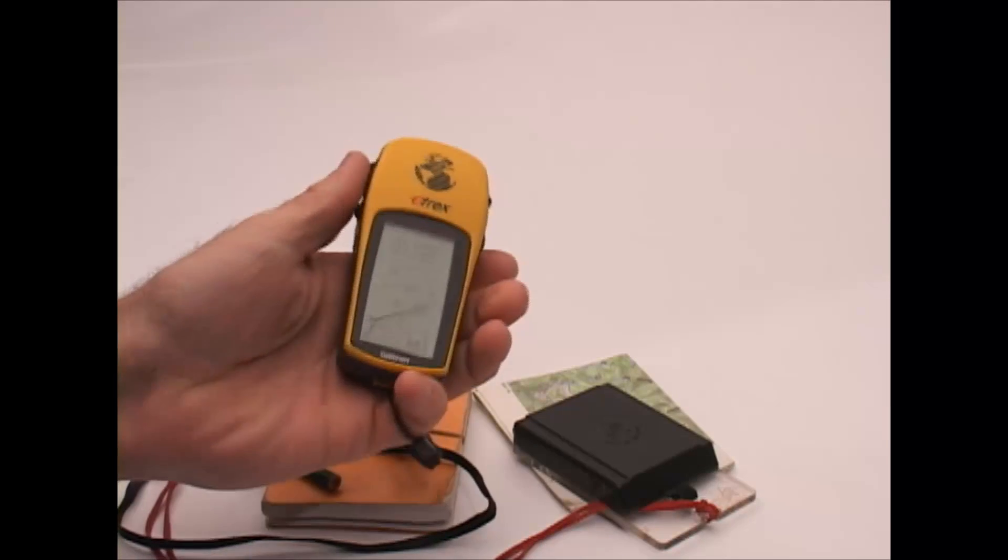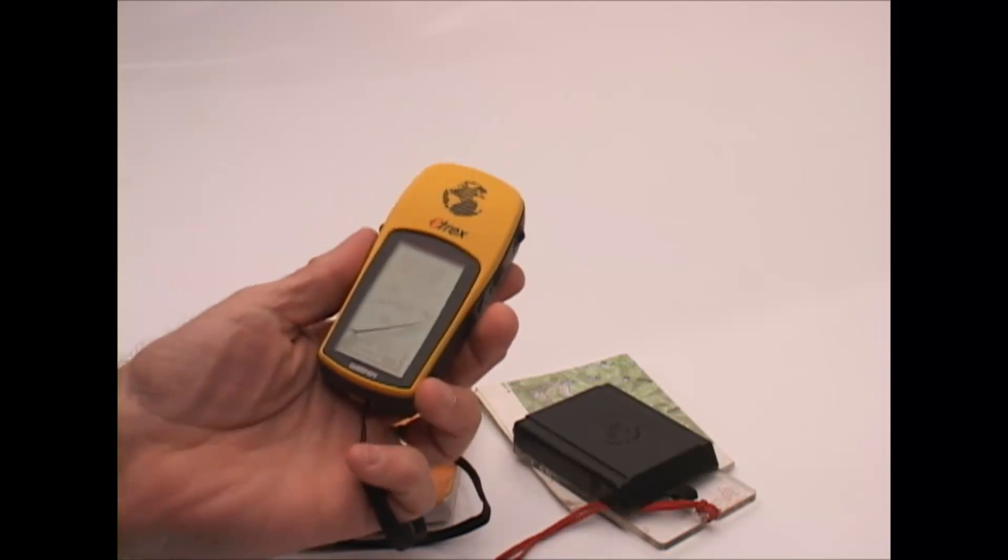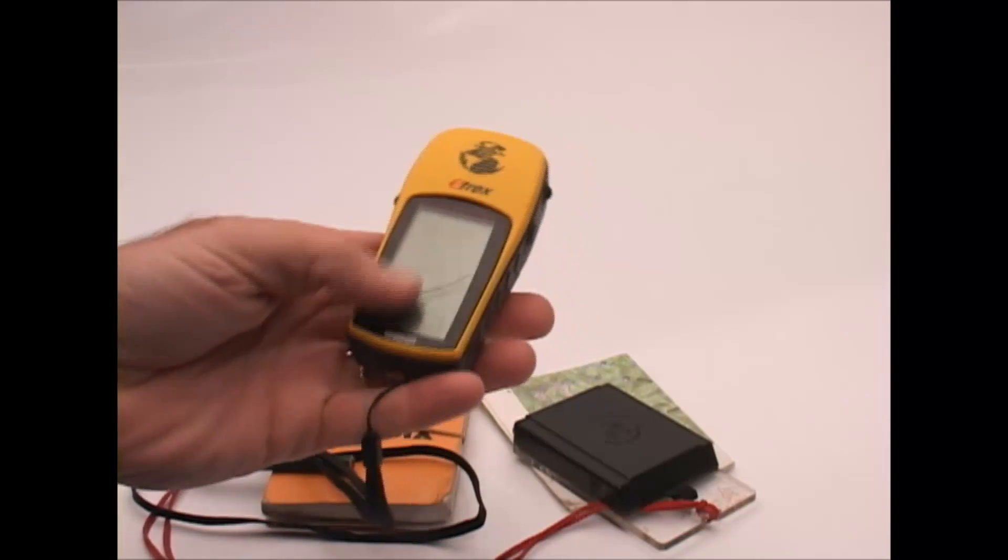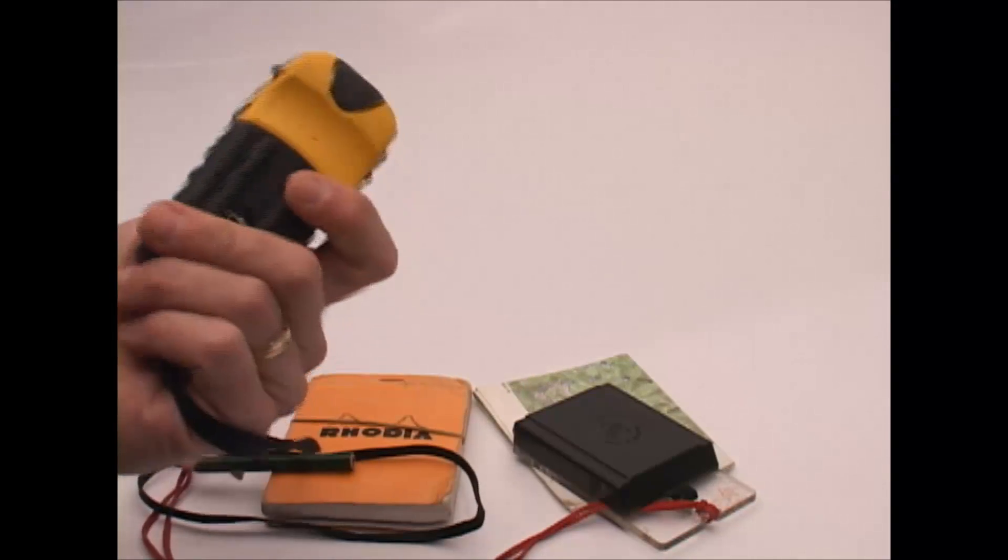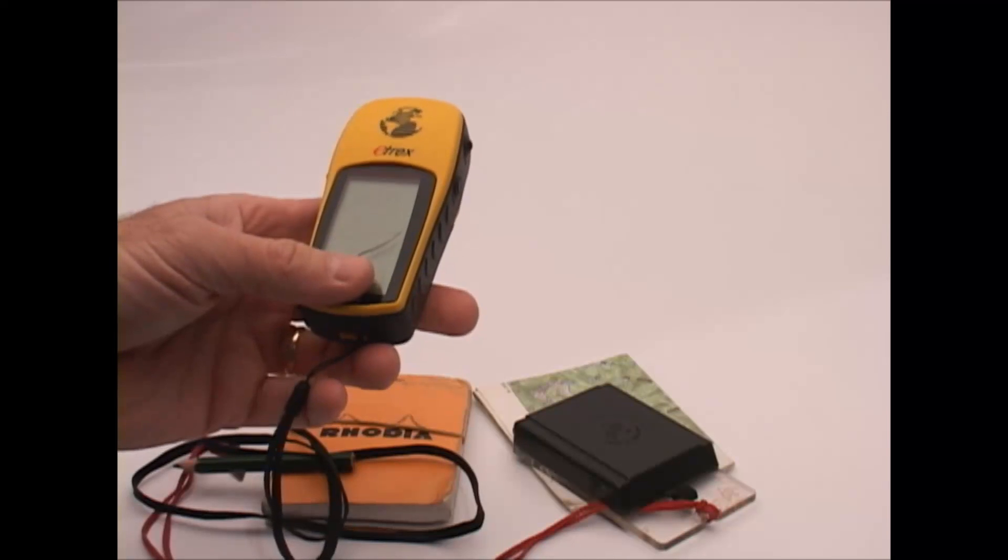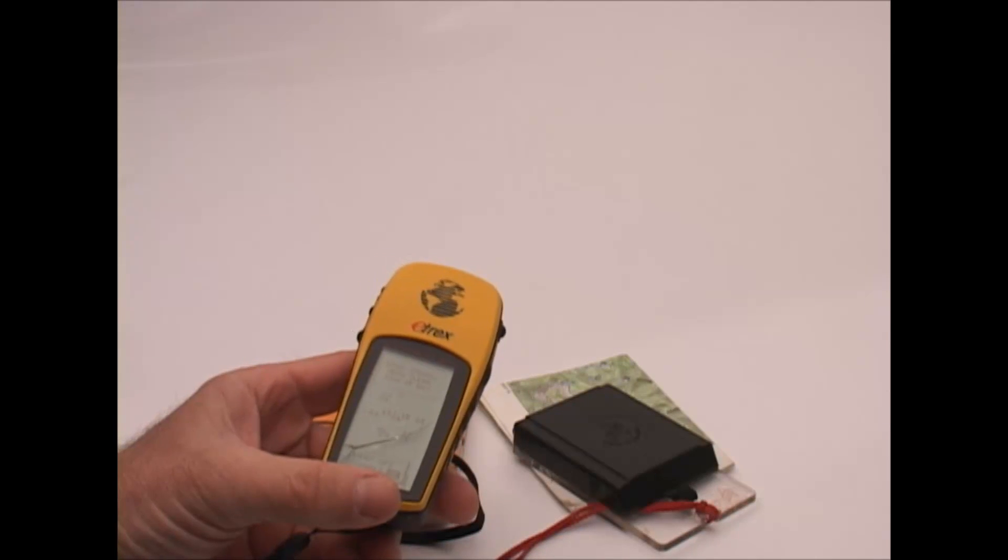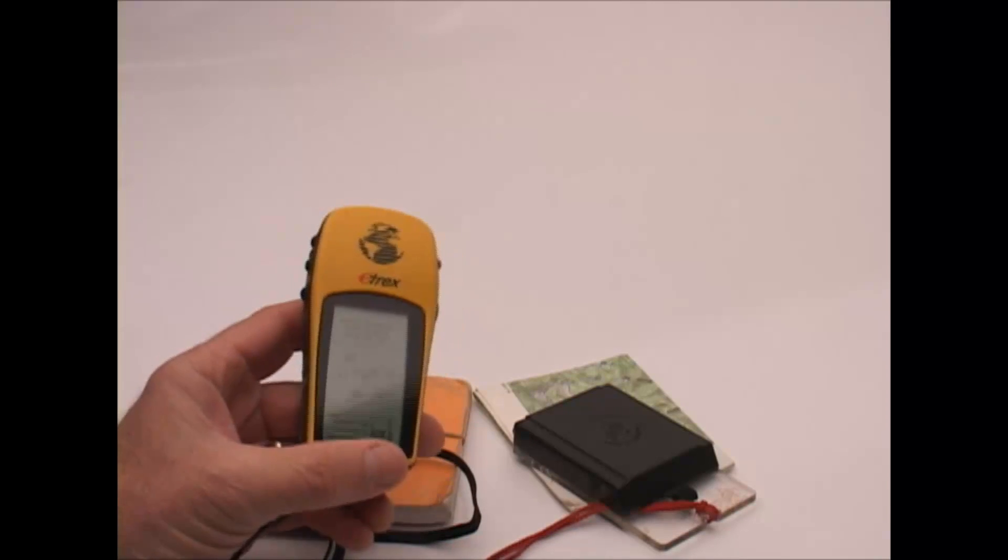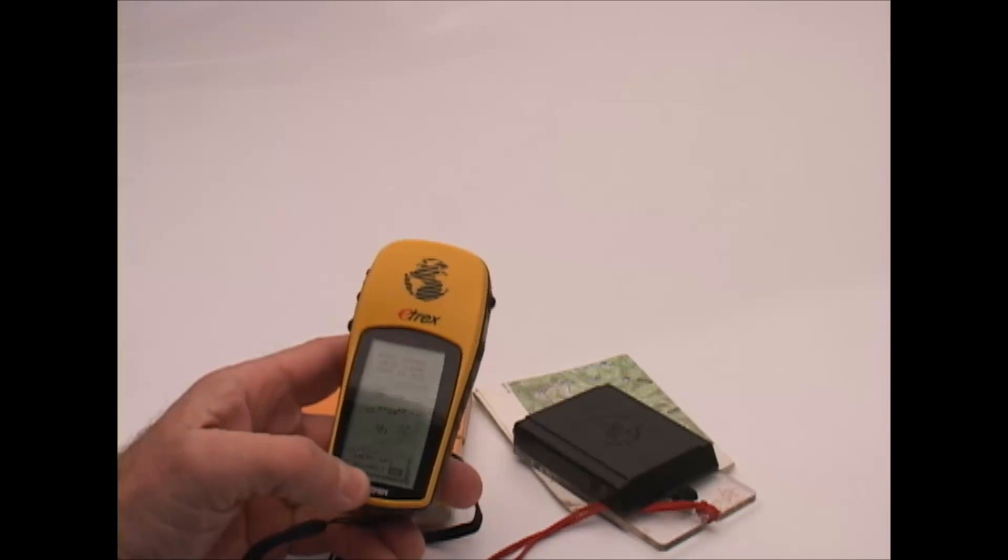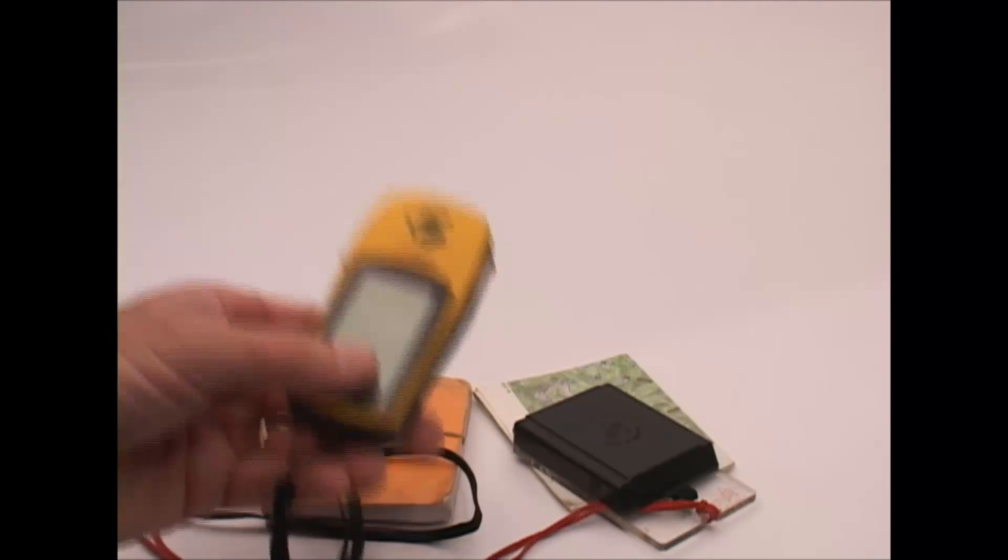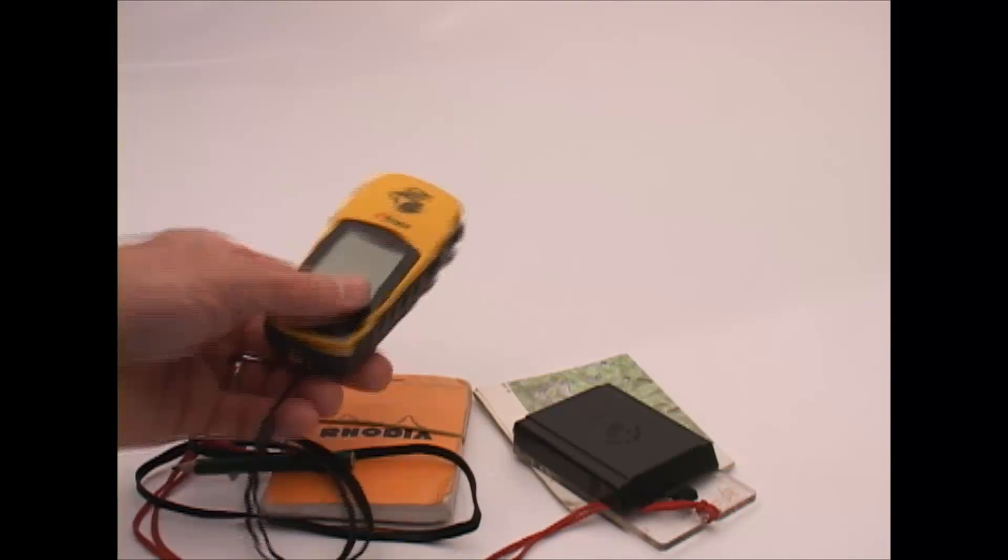GPSs, on the other hand, are subject to failure. Batteries can go dead. You can drop them. You can see that I've dropped mine here. It's got a crack in the glass. It didn't affect the performance of it, but it could have. And with any GPS, if you get into really steep terrain under thick cover, particularly when there's a lot of moisture in the air with clouds or rain, sometimes you're not going to be able to pick up a good signal. So I would never depend on my GPS as my primary hunting navigation tool.